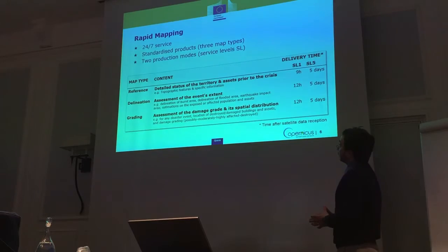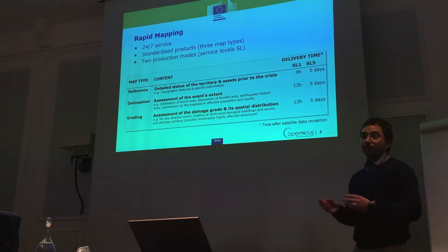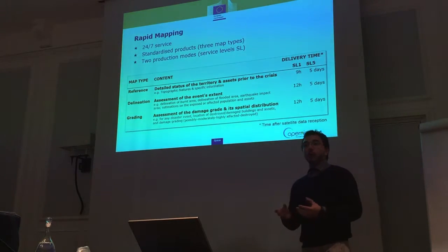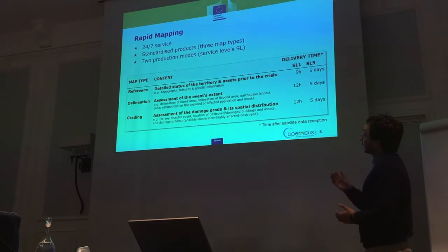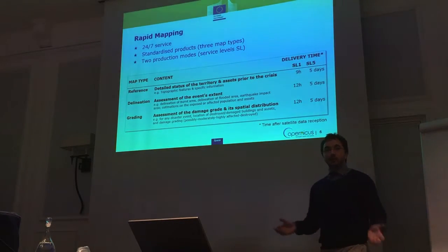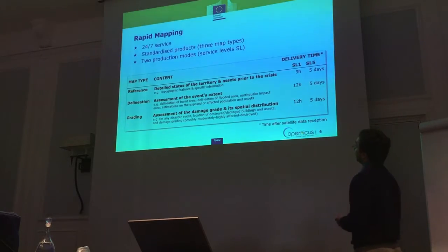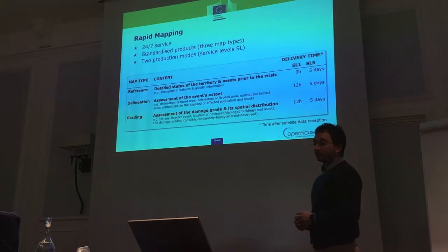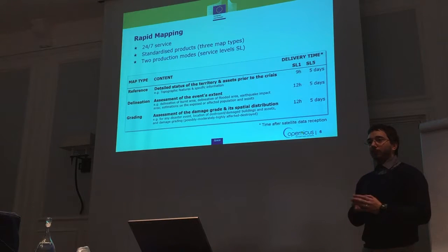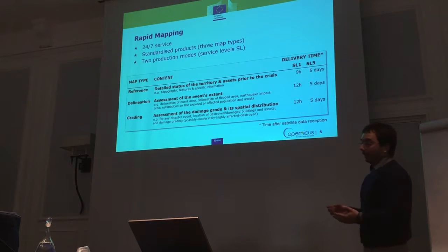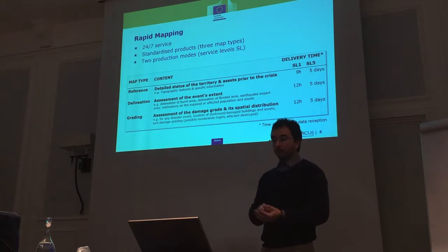Immediately after an emergency, using archive satellite images, we release reference data — maps showing the normal pre-event situation on the ground. The second product is the delineation, which is an assessment of the extension of the disaster: flooded areas, the extent of earthquake damage, and so on. Then comes the more detailed product, the grading, which is an assessment of damage on the ground — building by building, infrastructure by infrastructure — where our service providers tag each entity by level of damage.